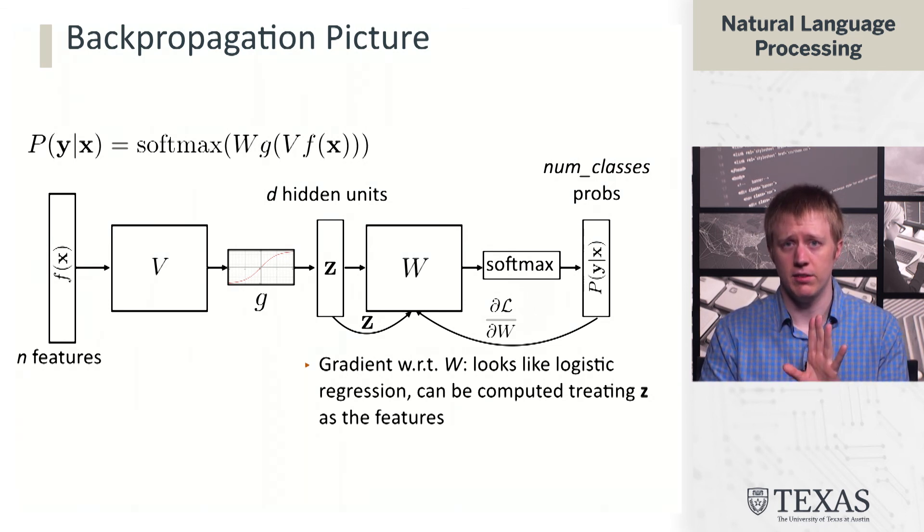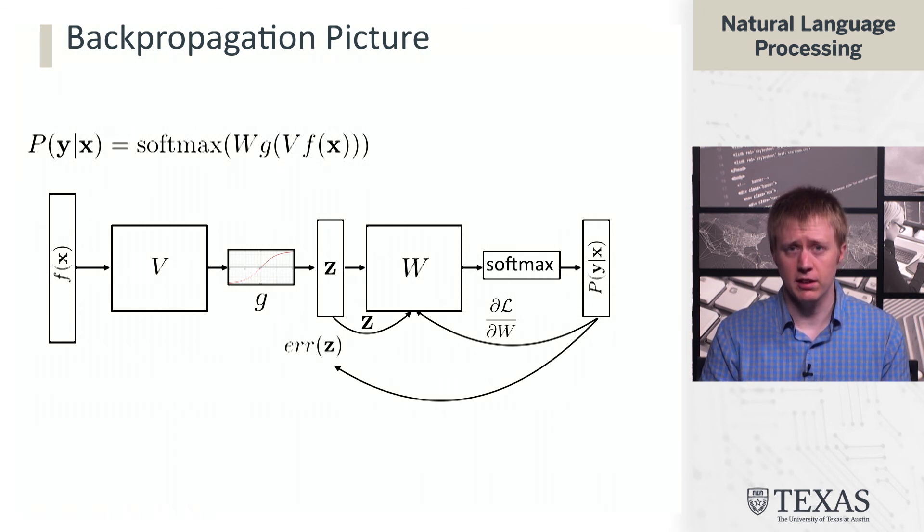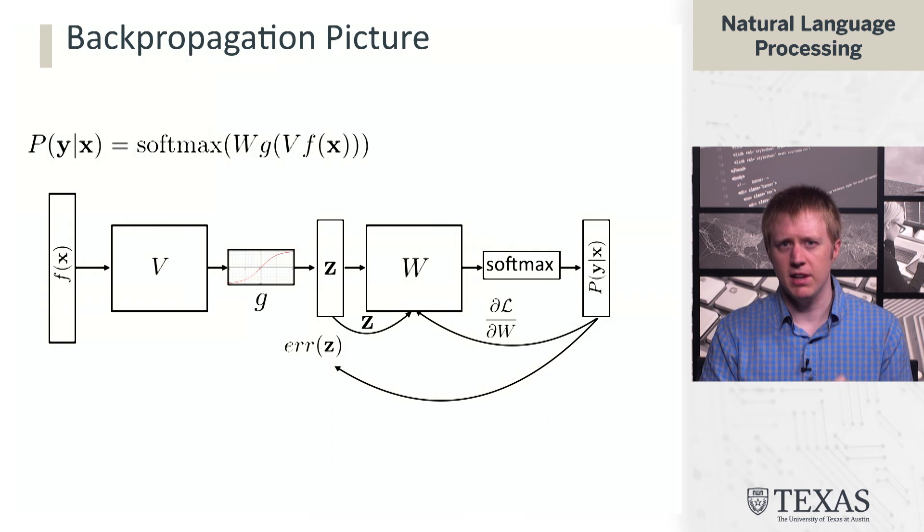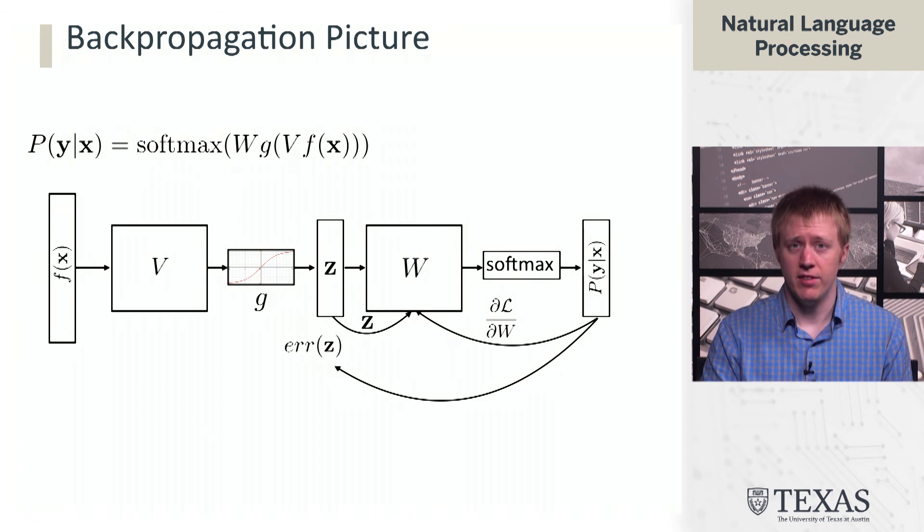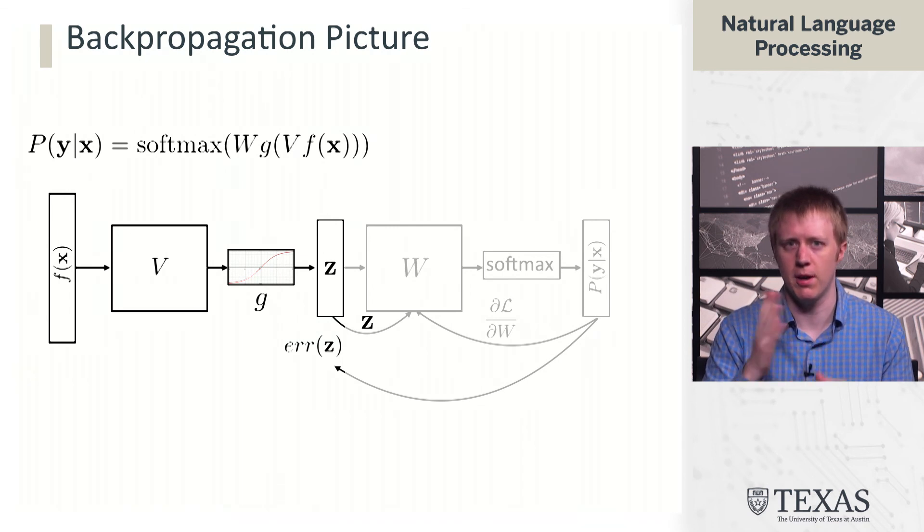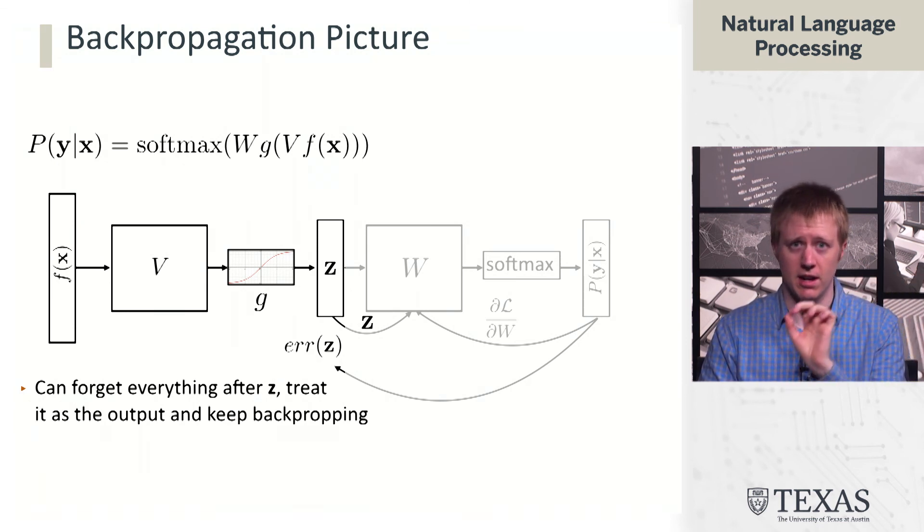Now we have to think about using backpropagation and computing gradients for earlier stages of the network. This is where things get more complicated. I'm only going to go through a sketch. The high-level idea is that we're going to compute this vector called an error signal from the output layer, and pass that back to this position where we've computed z in the network. We can now ignore everything that happens after that. This is why we're thinking of this as backpropagation: we compute something and work our way backwards through the network and compute gradient updates.